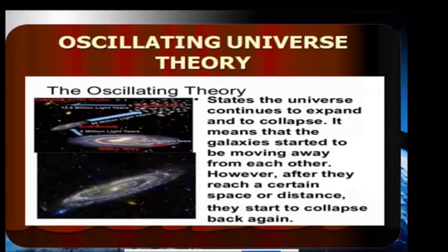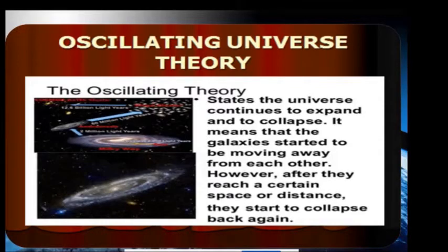We have the oscillating universe theory. The oscillating universe theory is the state of the universe that continues to expand and to collapse. The galaxies started moving away from each other; however, after they reached a certain distance, they collapse and expand again. It is a cyclical theory — there is a continuous pattern of collapse and expand from a certain distance.